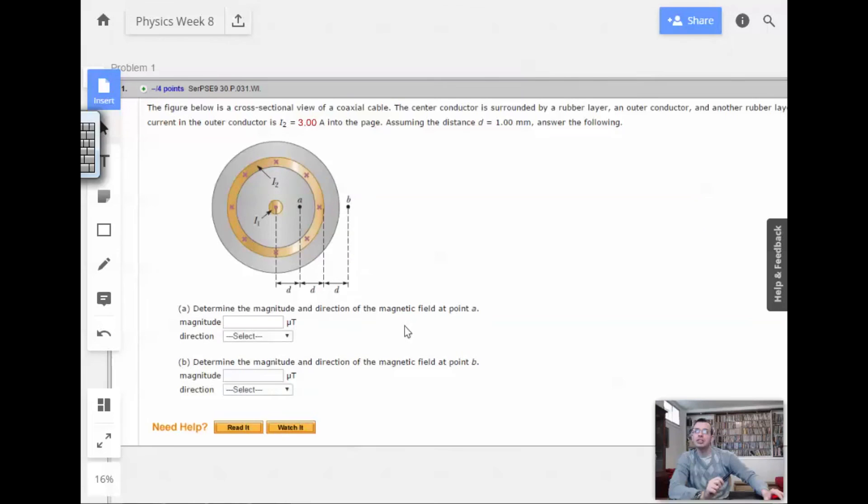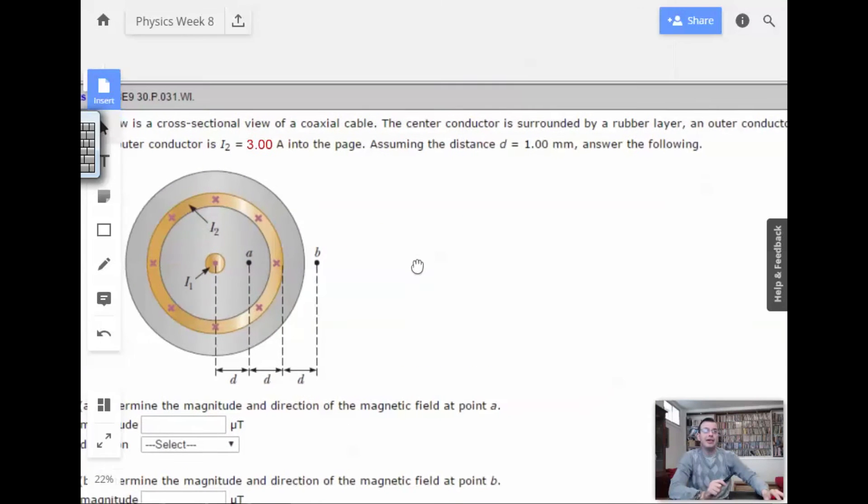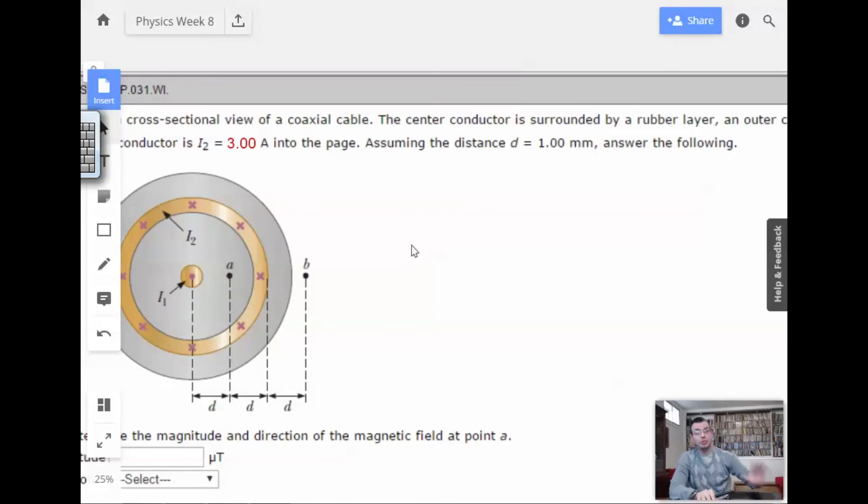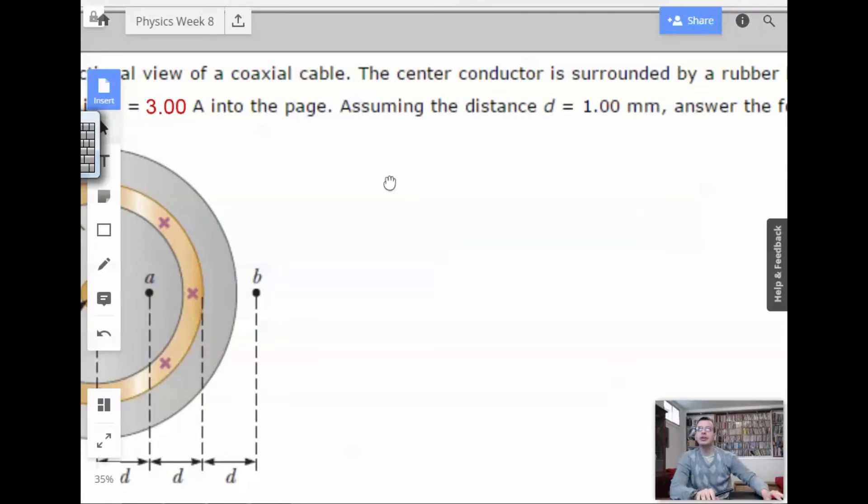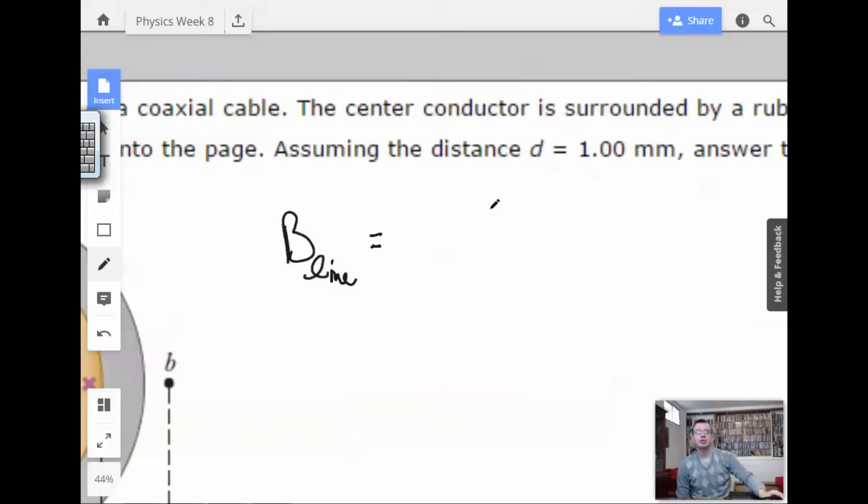Determine the magnitude and direction of the magnetic field at point A. Alright, so we're going to have three equations. There's three magnetic equations we need to worry about in life. So the first one is B inline.